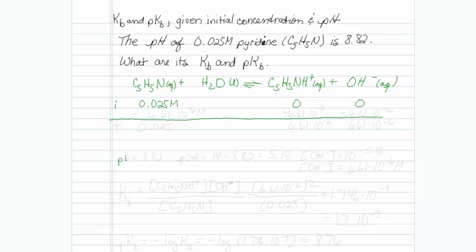Remember that the pH is equal to 8.82, so that means the pOH has to be equal to 14 minus 8.82, which is equal to 5.18.